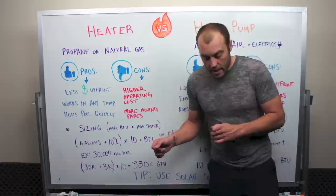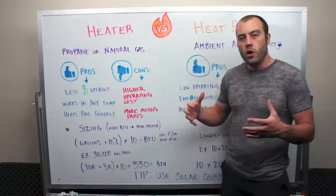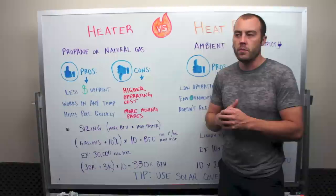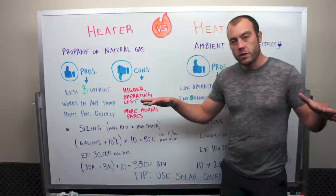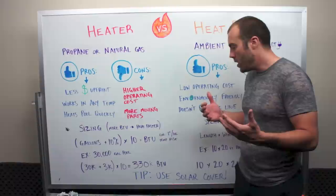In either case, it is very important, critical even, that you use a solar cover or solar blanket, which kind of looks like bubble wrap and goes on top of the pool when you're not using it. That's because most of the heat loss you're actually going to get from your pool is due to evaporation. If you can cover your pool with a solar cover, you're going to cut way back on the heat loss through evaporation, which is going to make either a heat pump or a heater function properly and be more efficient.